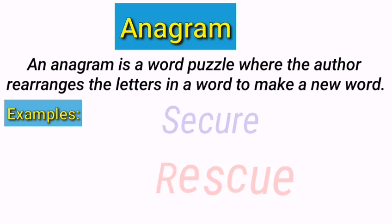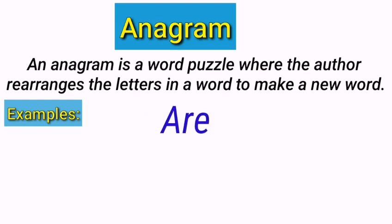Look at another example. Are. Again, look at this word. We can also rearrange the letters of this word to make another new word by taking E, A, R. So it creates a new word, ear. This is called anagram.